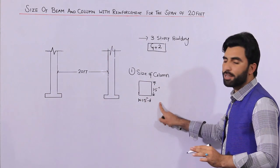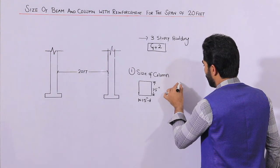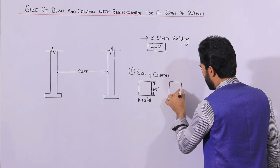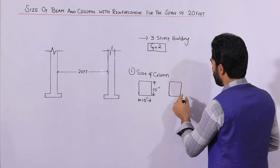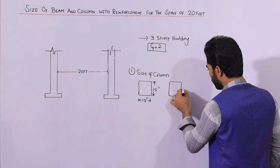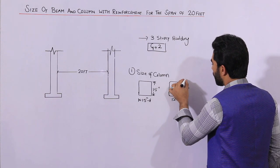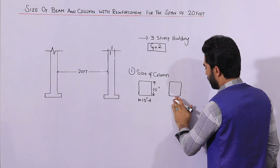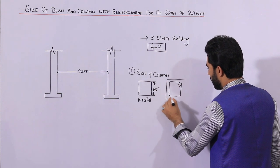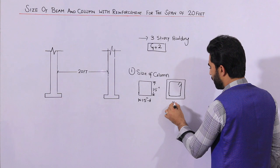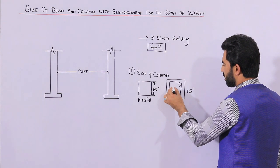Now, for the inside steel reinforcement of this column size, the dimension shown includes the concrete cover. The ring or tie size should be 12 by 12 inches. So with concrete cover the outer column is 15 by 15 inches, and the inner ring size will be 12 by 12 inches.